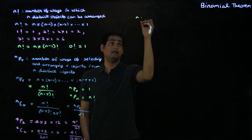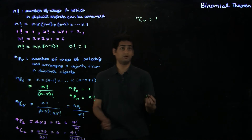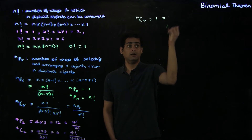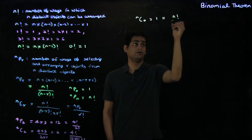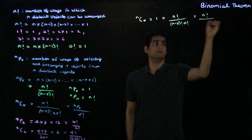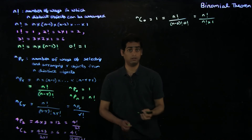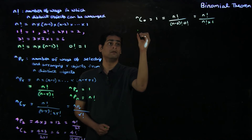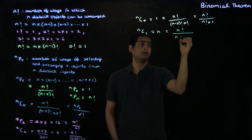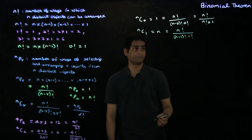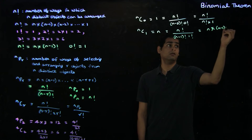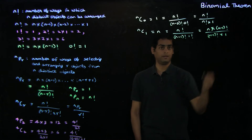The first property is nC0 equals 1. This is the number of ways of choosing 0 objects from n distinct objects, and there is only one way to do so. You can also arrive at this from the definition of nCr: n factorial divided by n minus 0 factorial times 0 factorial, which is n factorial divided by n factorial times 1, since 0 factorial is defined to be 1. The second property is nC1 equals n, which from the definition is n factorial divided by n minus 1 factorial times 1 factorial, which is n times n minus 1 factorial divided by n minus 1 factorial, giving us n.